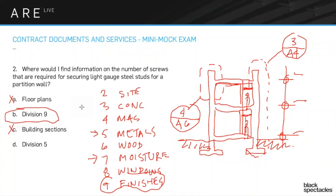This one is tricky enough that not getting it right is understandable — only about ten percent of the group got it right. This is absolutely a trick question, but unfortunately it's the kind that might show up on the exam. Similar versions have appeared on NCARB practice exams and other sources. Other examples include metal flashing under Division 7. The lesson: don't jump straight to the obvious conclusion — be careful about how you think through these questions.